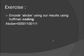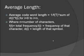This is what we got as the encoded message for ABCDE. We can also find the average length of a character based on the Huffman coding we have just found. Average code word length can be found using this formula: 1 over f(T) times the sum of d(i) times f(i) for i equals 0 to n.